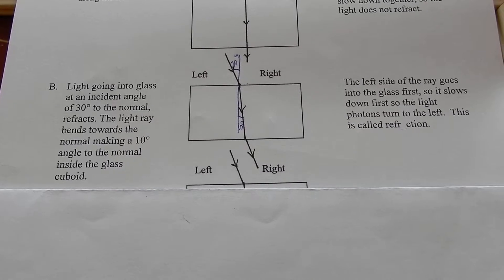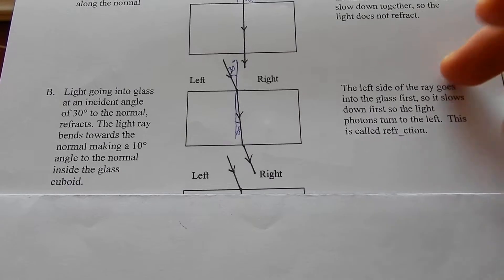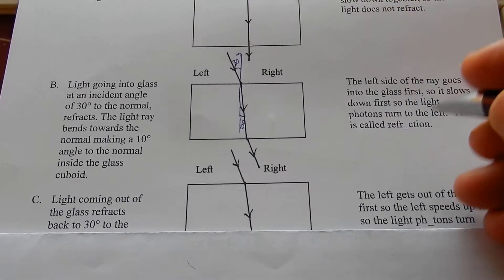Or the left side as we are looking at it. They should all be the other way up. Never mind, I'm going to change it. So it slows down first. So the light photons turn to the left. This is called refraction.